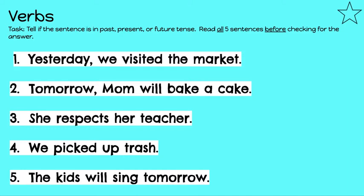You have a task: tell if the sentences are in the past, present, or future tense. Read all five sentences before checking for the answer. Number one: Yesterday, we visited the market. Number two: Tomorrow, mom will bake a cake. Number three: She respects her teacher. Number four: We picked up trash. Number five: The kids will sing tomorrow.